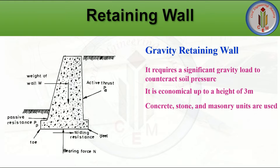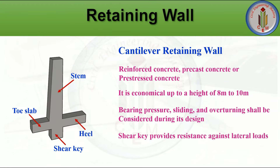Gravity retaining walls are massive in structure and require a significant gravity load to counteract the soil pressure. They can be economical up to a height of 3 meters, and are constructed using concrete, stone, and masonry units. These walls depend upon their own weight to resist lateral earth pressure; sliding, overturning, and bearing pressure must all be considered in the design.